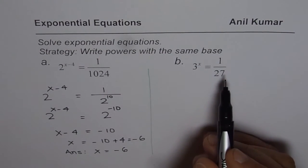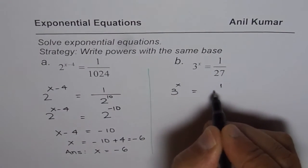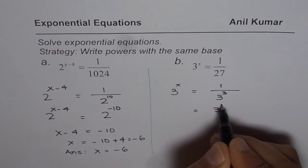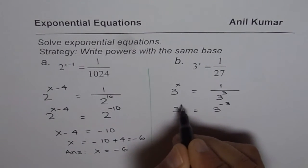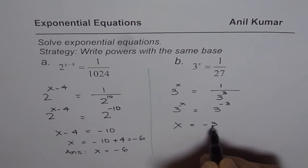Let us do the next one. So 3 to the power of x equals 1 over 27, which is 3 cube, which is the same as 3 to the power of minus 3. So 3 to the power of x equals 3 to the power of minus 3. So x is minus 3.